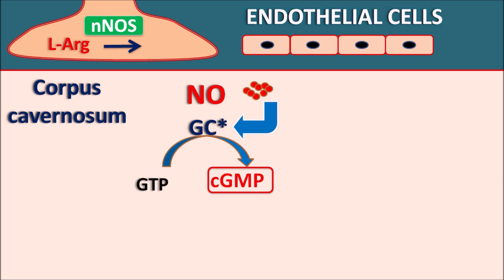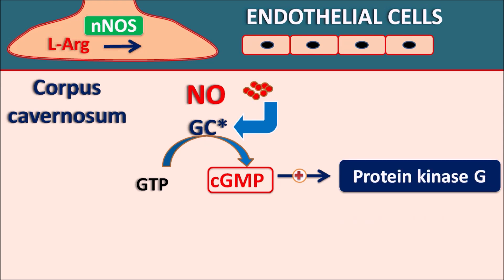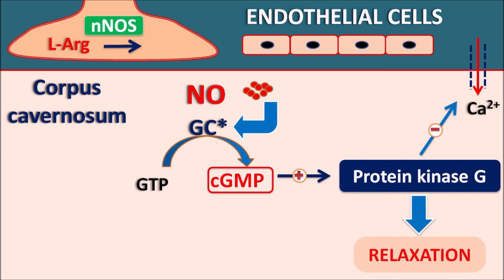Cyclic GMP, just like cyclic AMP, stimulates protein kinase G. These protein kinases are phosphorylating enzymes that inhibit inward-going calcium channels, so calcium does not enter the corpus cavernosum. At the same time, cyclic GMP can also inactivate MLCK — myosin light chain kinase. Through these two mechanisms, cyclic GMP produces smooth muscle relaxation.